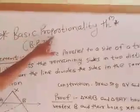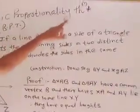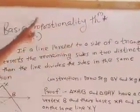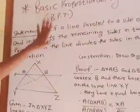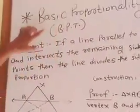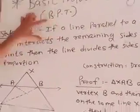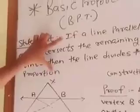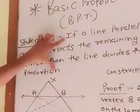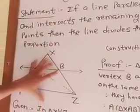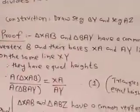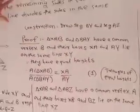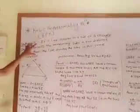This is the Basic Proportionality Theorem, short form BPT. After 10th standard, this theorem appears in examinations. The statement is given in the question paper. You draw the figure, the given, the to prove, and the construction. This is a conditional statement from 9th standard.